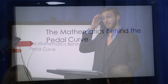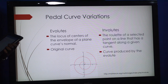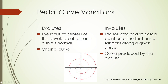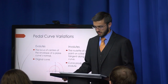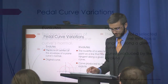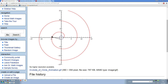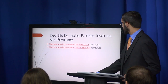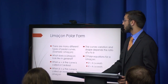Now we're going to talk about the mathematics behind the pedal curve. Let me begin with evolutes and involutes. The evolute is the locus of centers of the envelope of a plane curve's normals — essentially the original curve. The involute is the roulette of a selected point on a line tangent along the given curve, and this curve produces the evolute. Now I'll show you the evolute, and then hand it over to Ab for the limaçon in polar form.